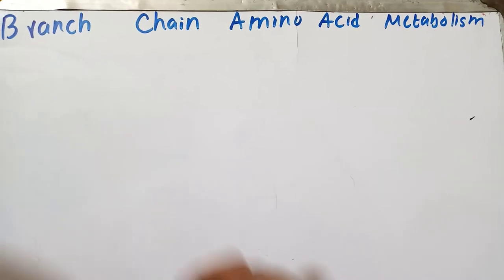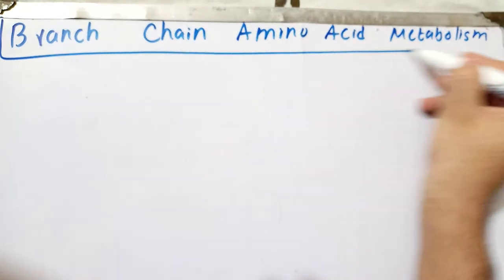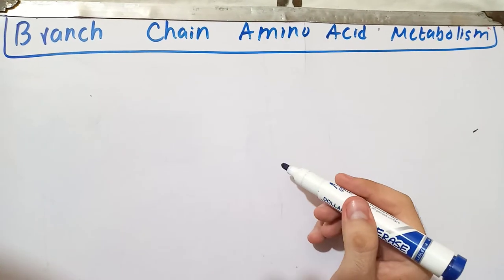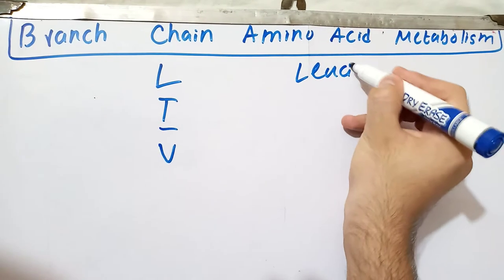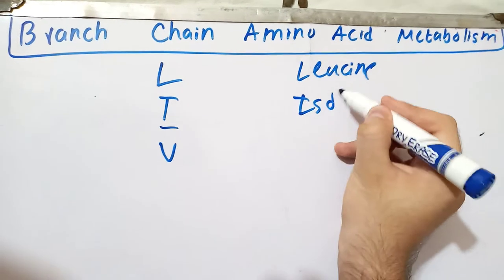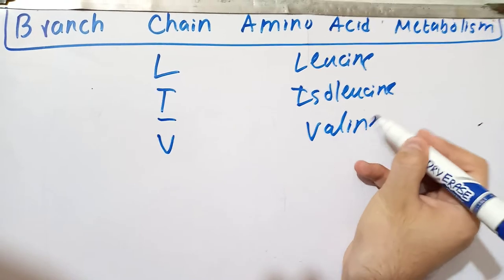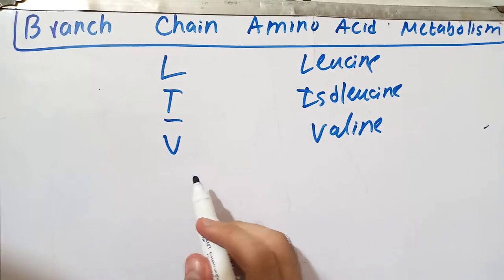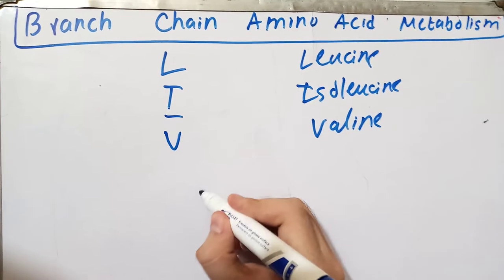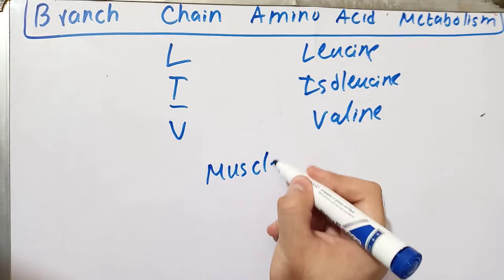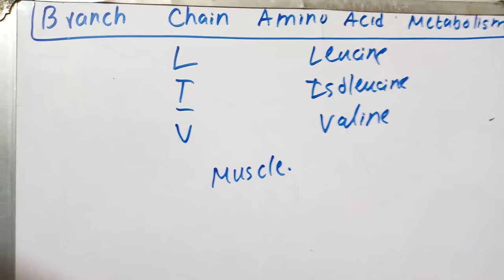Today we will talk about the metabolism of branched-chain amino acids — how these amino acids are metabolized. The branched-chain amino acids are mainly three: L, I, V — leucine, isoleucine, and valine. These amino acids are not metabolized in the liver unlike other amino acids; they are metabolized in the skeletal muscle.